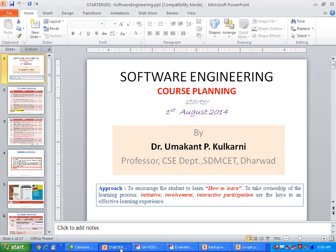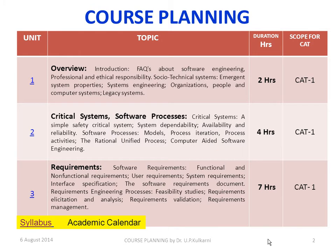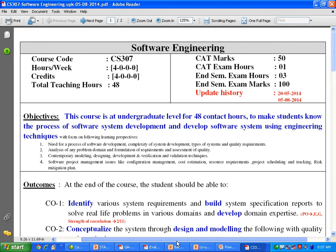We'll take an example of software engineering — this is the course planning we are using this time. Let's look into the syllabus and how we wrote course outcomes and course objectives for this course. CS 307 is at the undergraduate level for 48 contact hours, aimed at making a student know the process of software system development and develop software systems using engineering techniques.